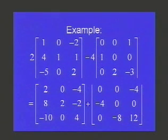At that point, you want to add the corresponding entries again. So the 2 and the 0, the 0, 0, negative 4, negative 4, 8, negative 4, etc.